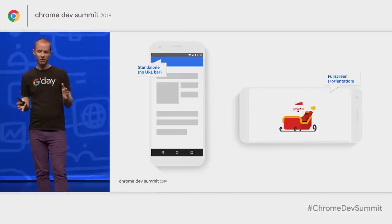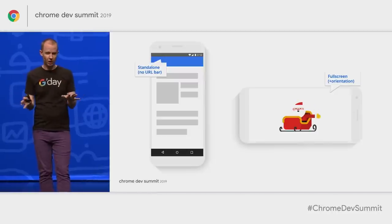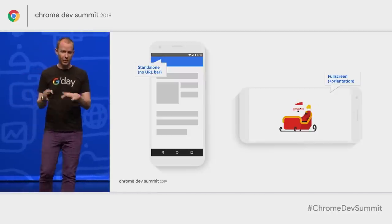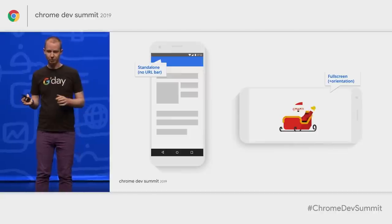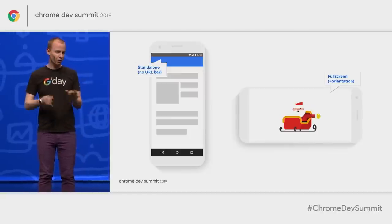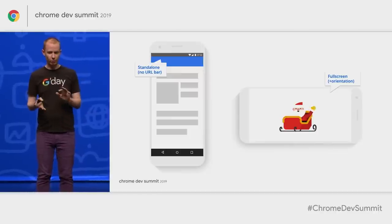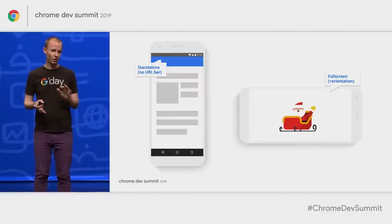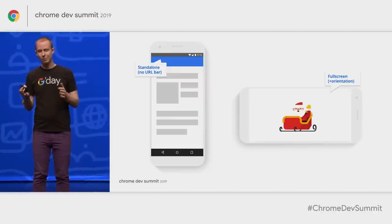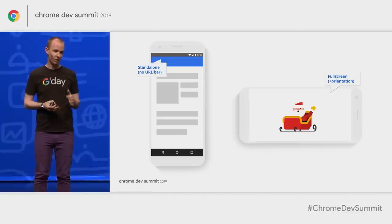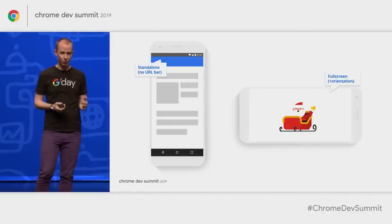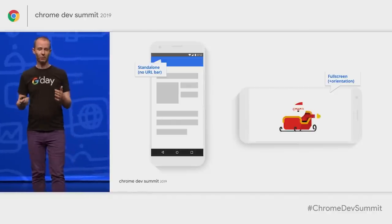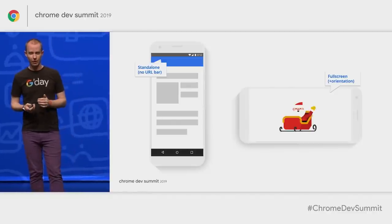Websites running in any mode can still use browser APIs to later request full screen. There's a few other options, including 'browser,' which retains the URL bar. But honestly, we think full screen and standalone are the two options most people end up choosing when they configure their installed PWA.